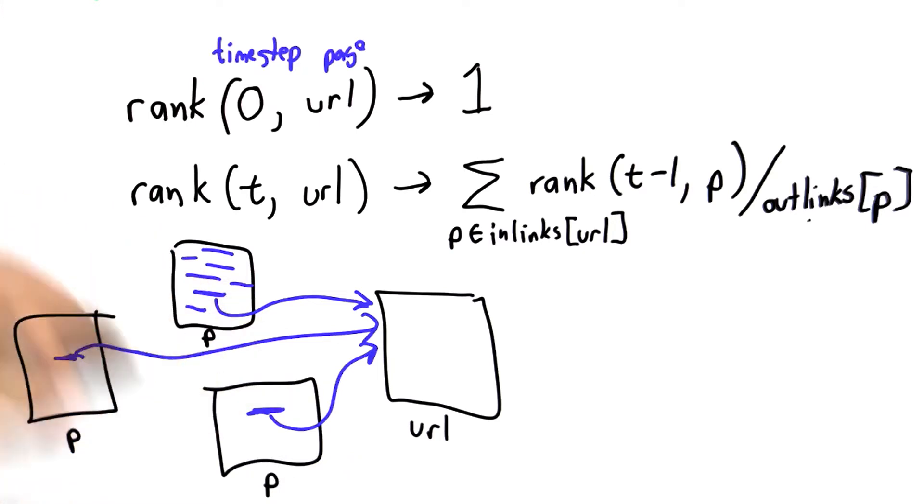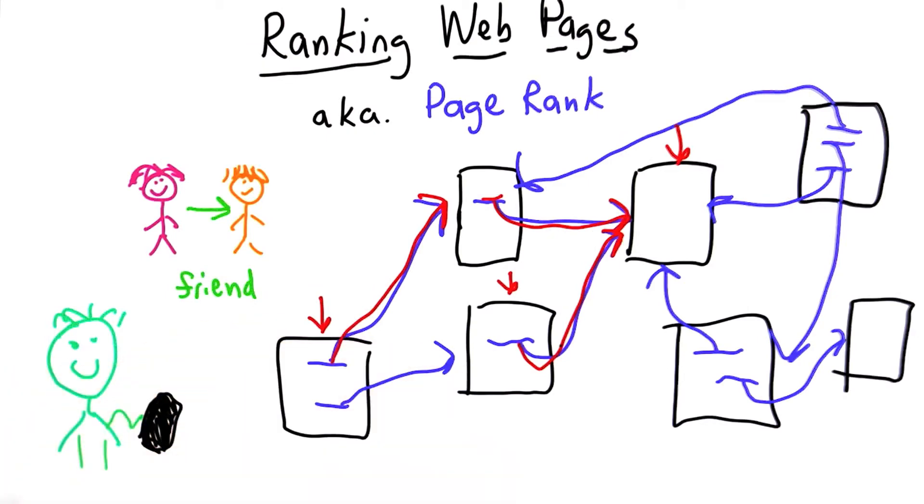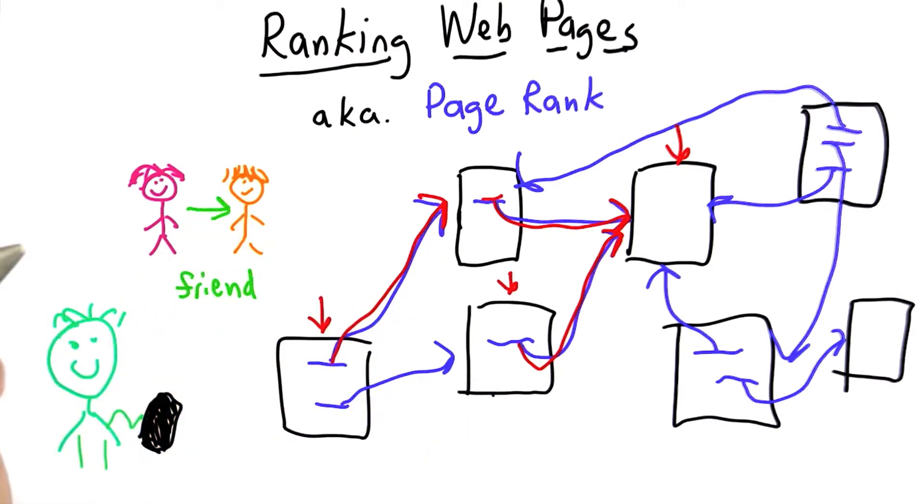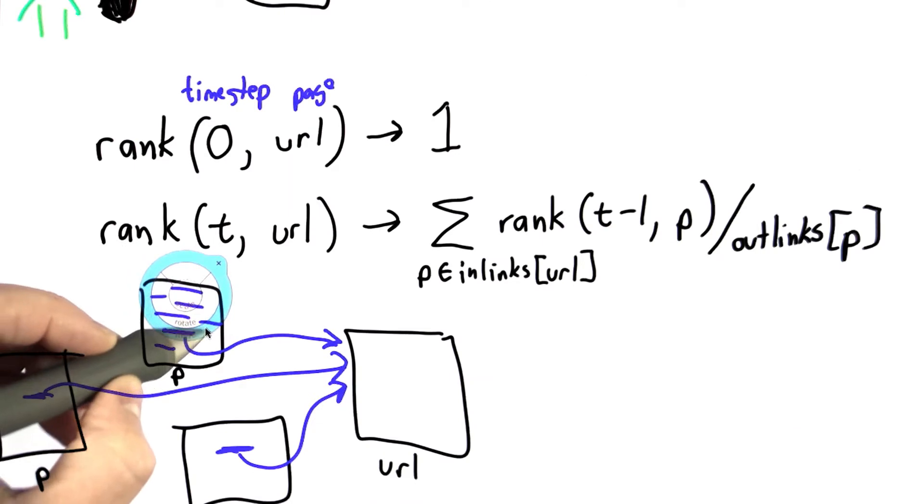If we think of our random web surfer again, even if she's following a path that does have more links, at some point she might decide to get tired and start again with a new random page. The damping function determines how frequently our random web surfer will pick a random link versus starting over on a new random page. We're going to use the damping value to scale this number.